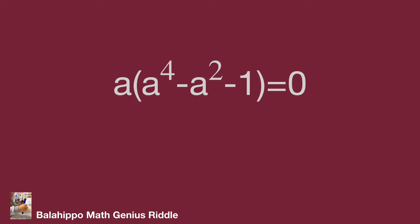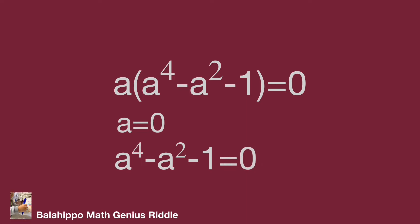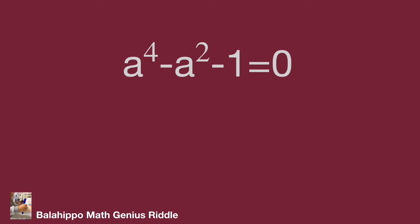Then the equation is a multiplied by the quantity a to the power of 4 minus a squared minus 1, equal to 0. So we get a equal to 0 as the first answer, or a to the power of 4 minus a squared minus 1 equal to 0. Let's find a from a to the power of 4 minus a squared minus 1 equal to 0.